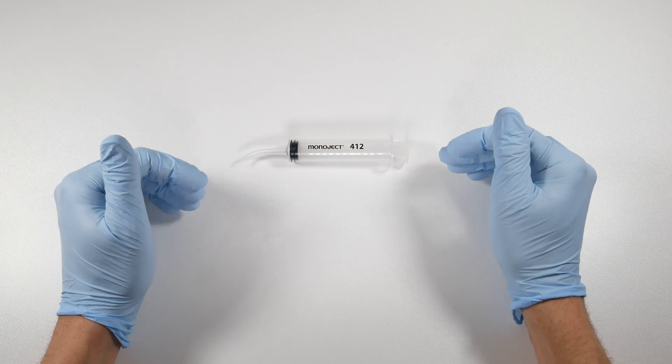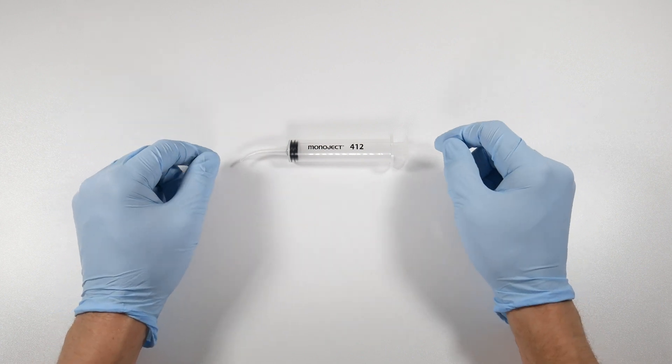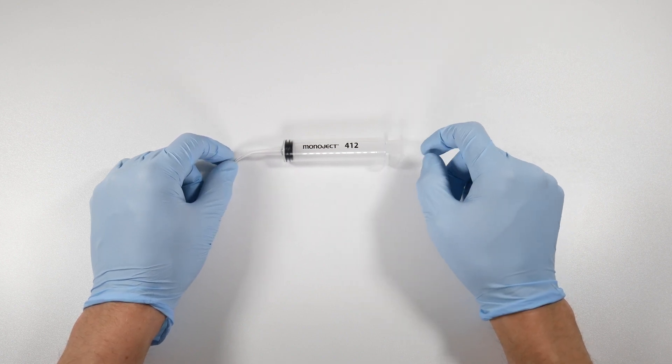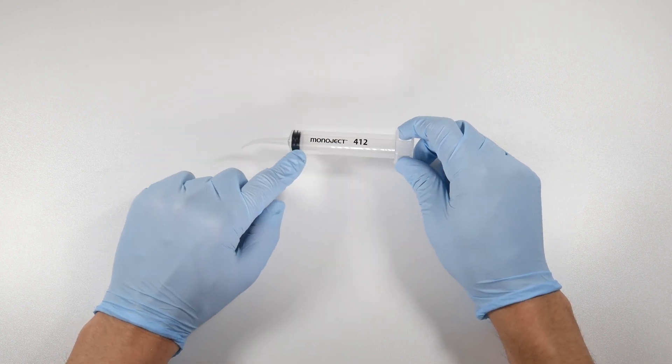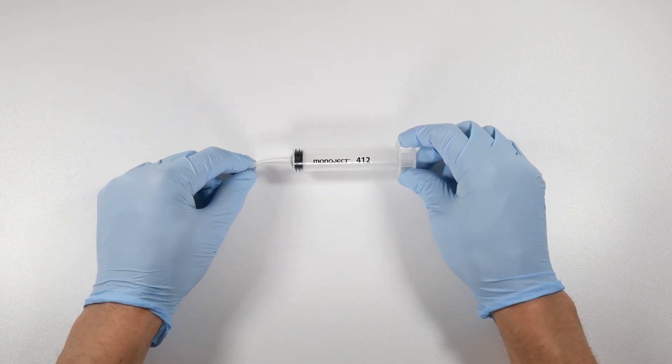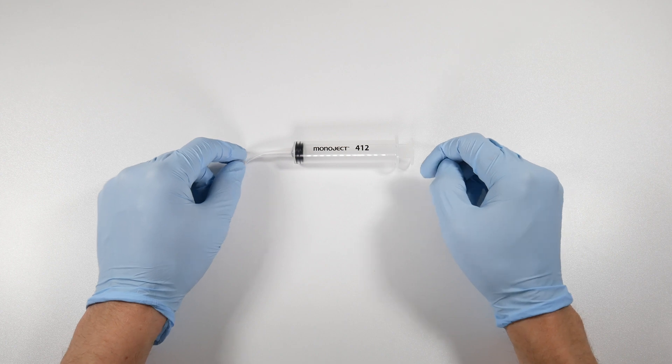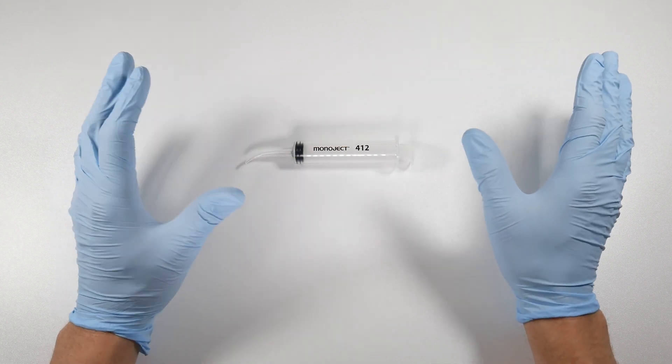Now a Monoject syringe is a 12cc or 12 milliliter syringe, meaning that's the amount of fluid that you can put in it. Normally you're going to load this with sterile saline for an extraction procedure, and I would typically only use these if I'm taking out a tooth other than a third molar.